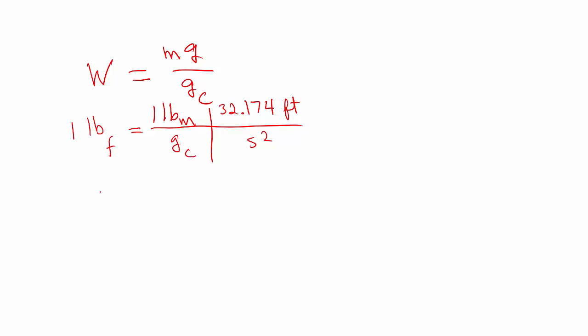If we solve for GC it will be 32.174 pound mass foot per pound force per second square. These are the units for GC.